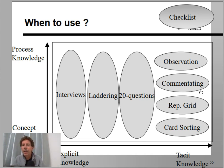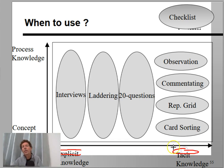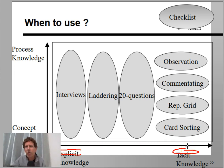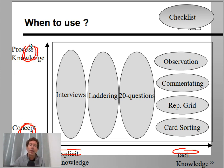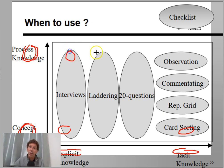I'll close off with a diagram. The two axes are as follows: on the horizontal axis, you'll find the distinction between explicit and implicit knowledge. Explicit knowledge — such as what you could read in textbooks — is easy to verbalize, while tacit knowledge is often hidden in culture or even in physical skills. The vertical axis distinguishes between conceptual knowledge and process knowledge: static knowledge about objects and relations versus process knowledge about procedures and steps.